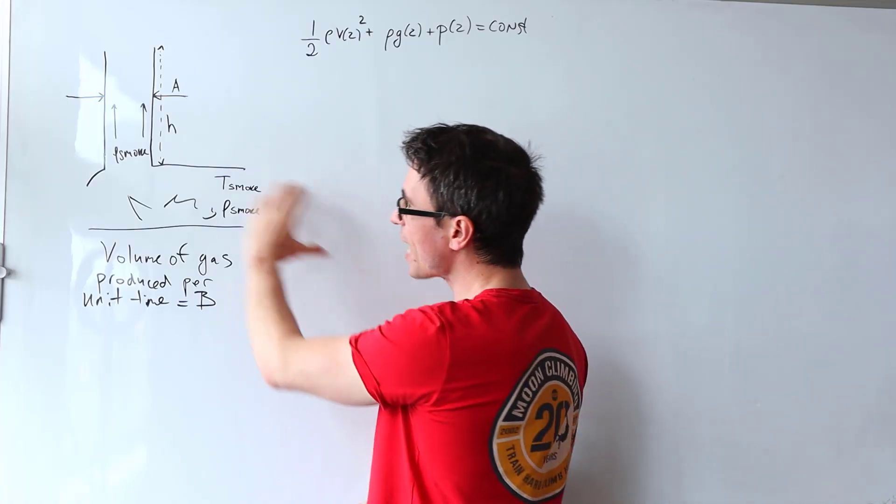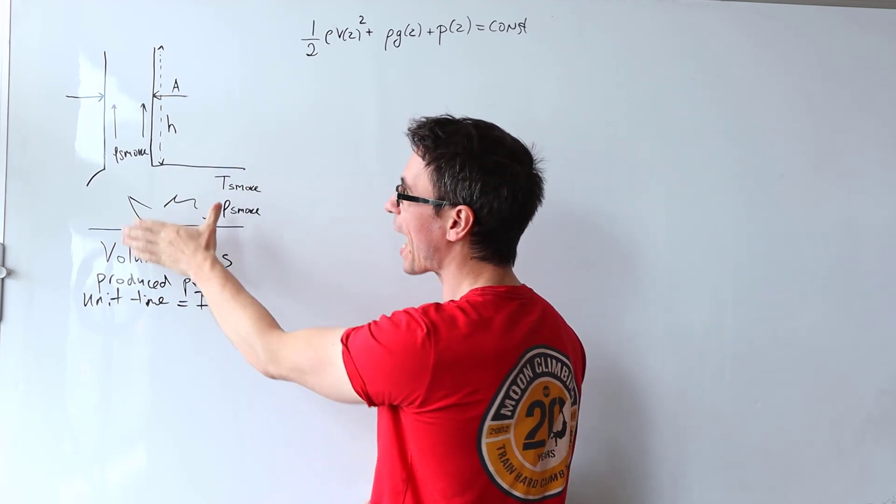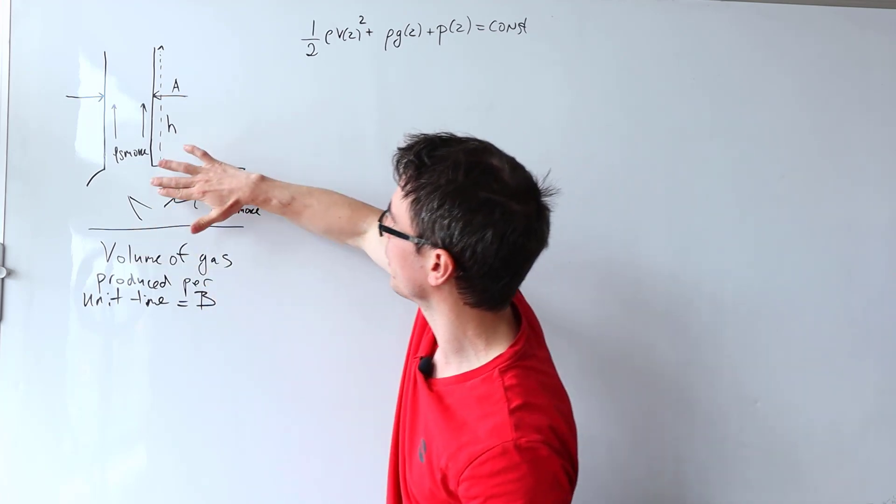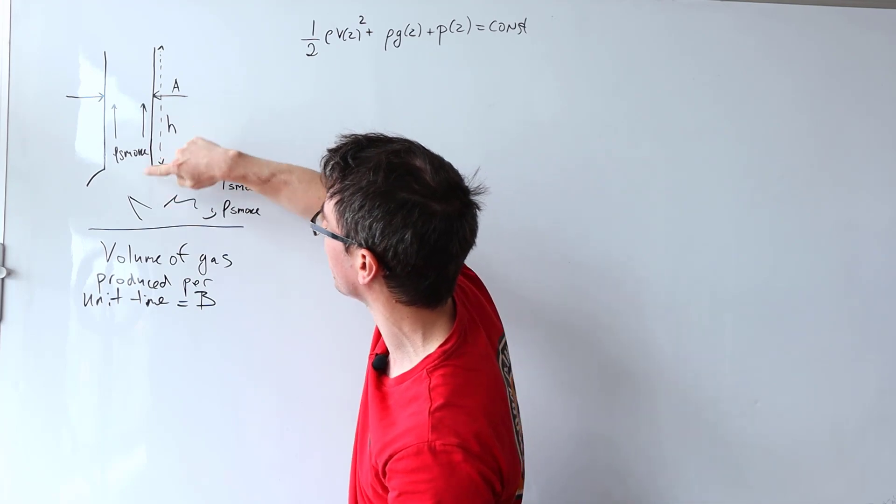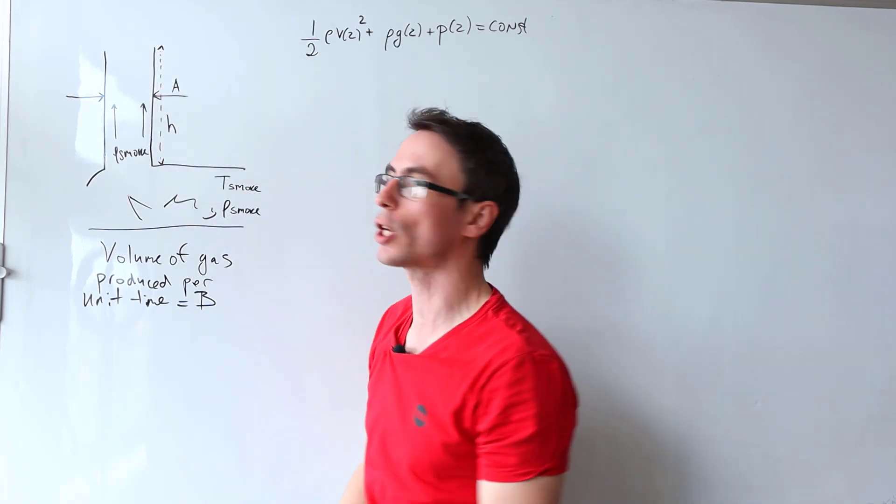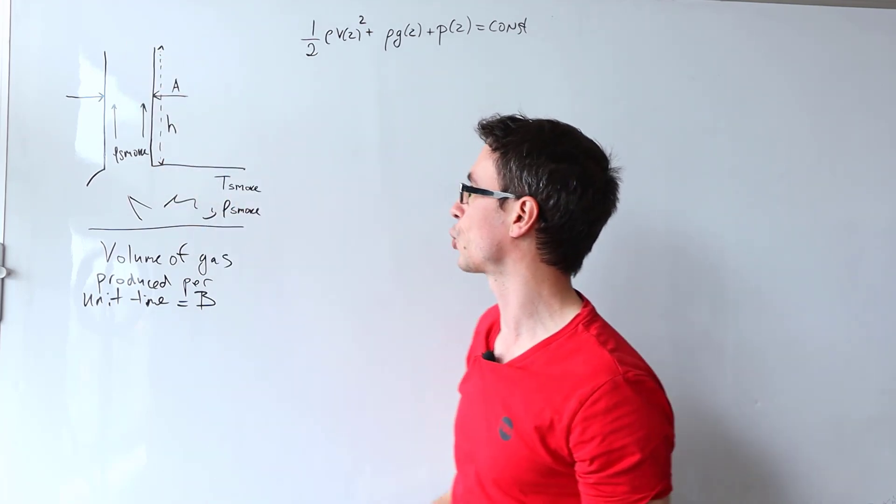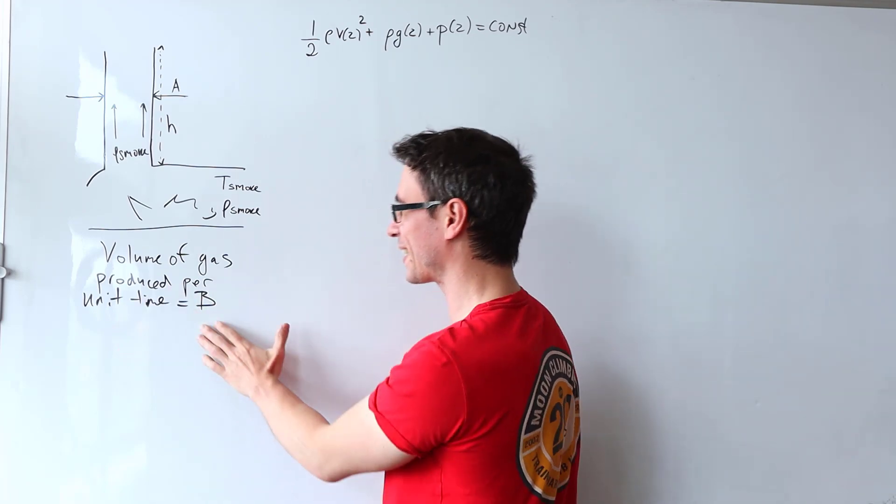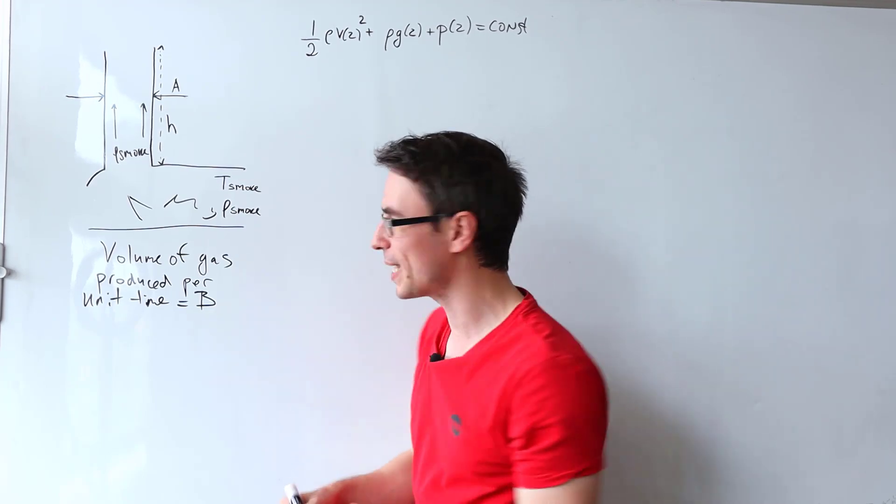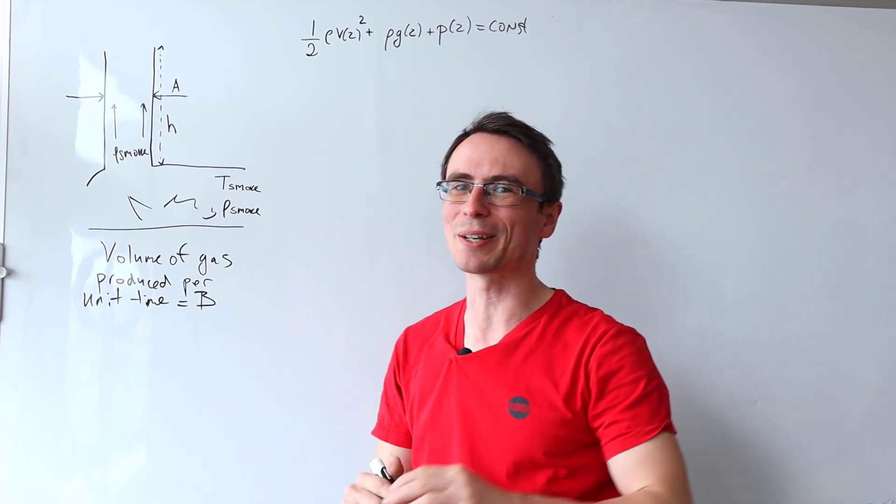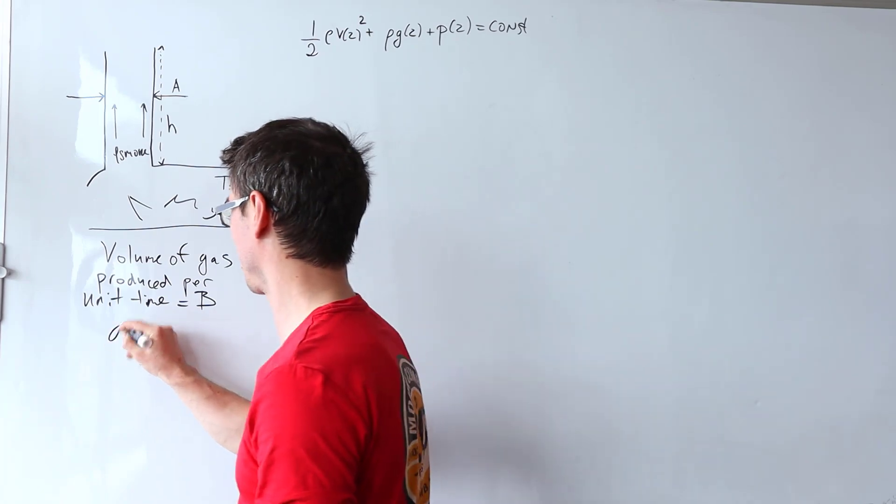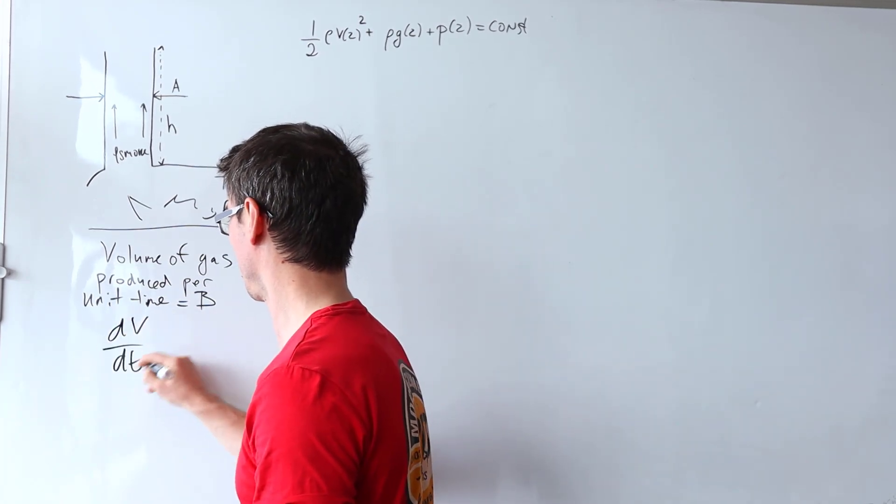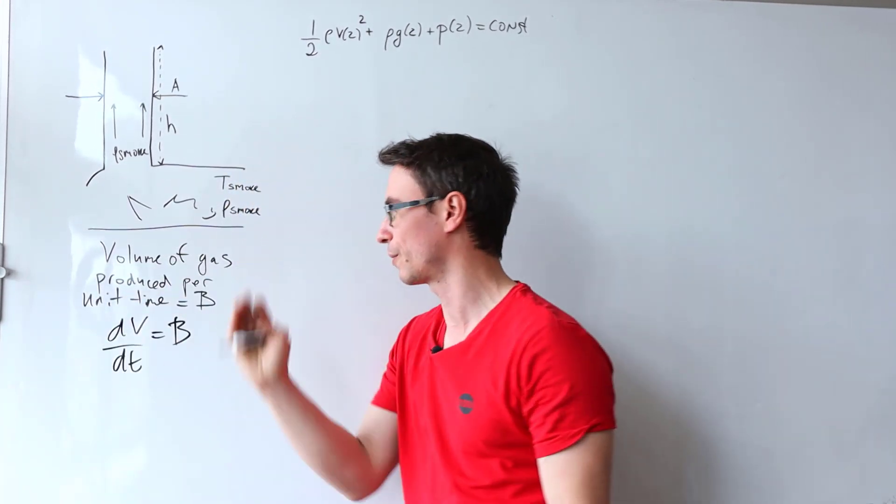So we have some air that enters the furnace, the burning happens inside of the furnace, and then the smoke starts escaping along the chimney of height h. The volume of gas or smoke produced by the chimney per unit time is given to be b. I always prefer translating words into math, so I'm just going to say that dV/dt is equal to b. This is just the volume flow rate.